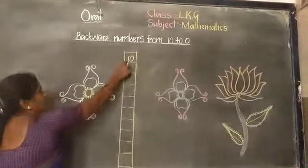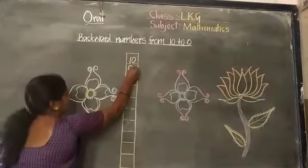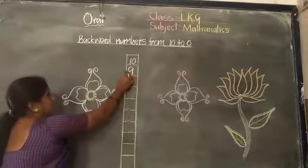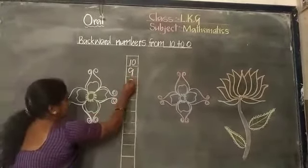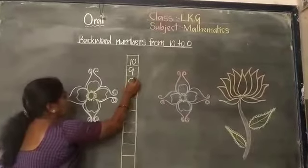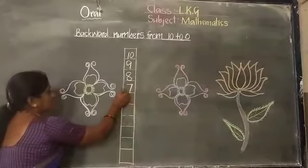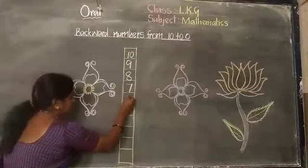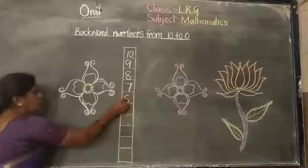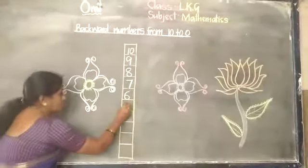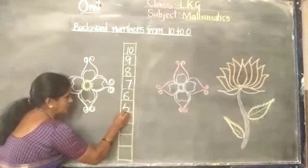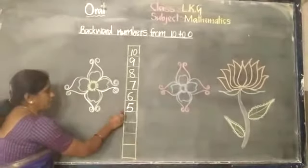What comes before 10? 9. Good. What comes before 9? 8. Good children. What comes before 8? 7. What comes before 7? 6. Good children. What comes before 6? 5. Super children. What comes before 5? 4.